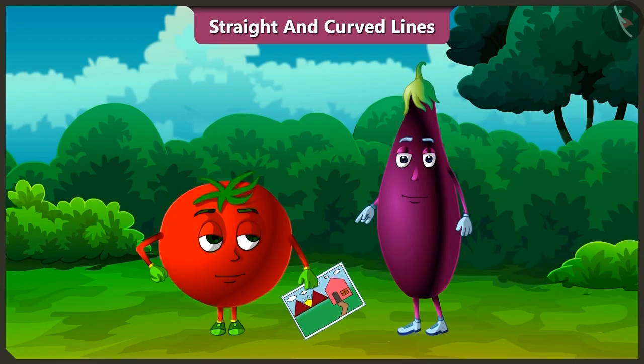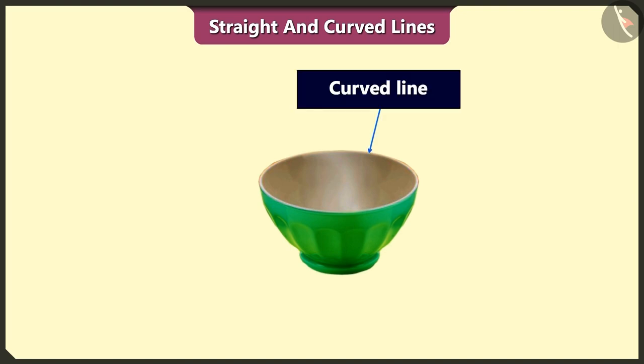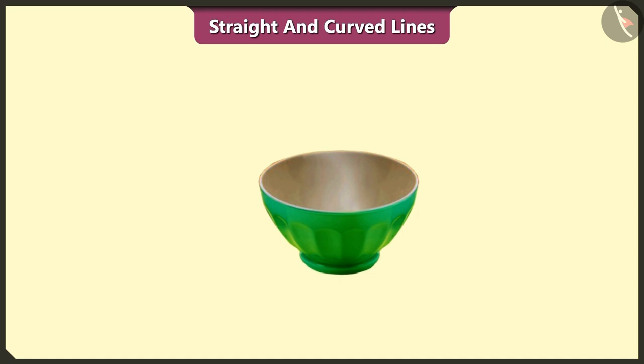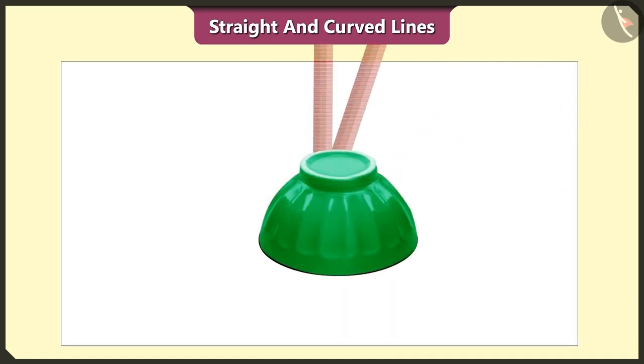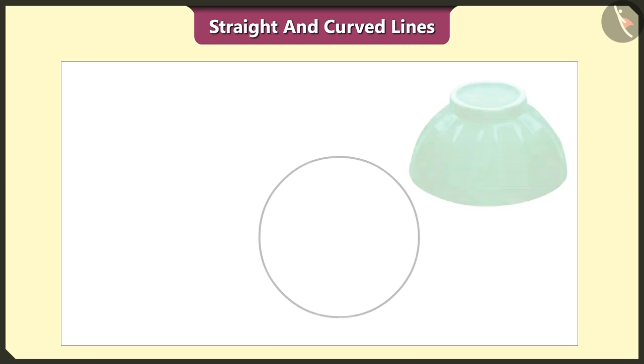Bingo, can we see straight lines and curved lines in objects other than drawings? Yes, we can see them in various objects around us. Look, this part of bowl is made up of curved line. If we place this bowl upside down and trace it, we get a circle. The circle is also made up of curved line.